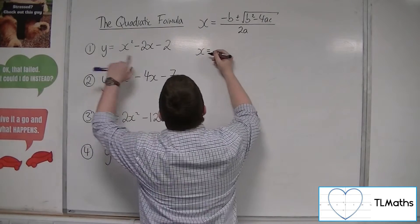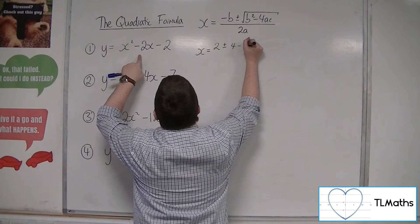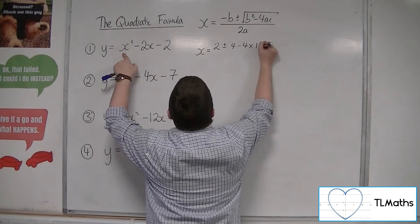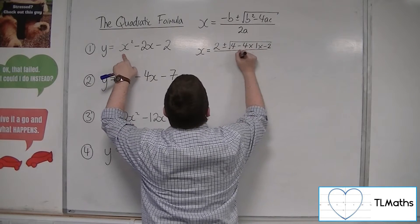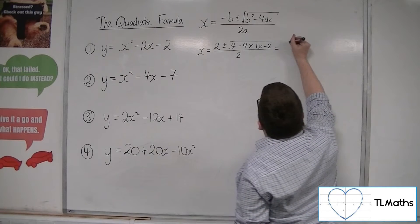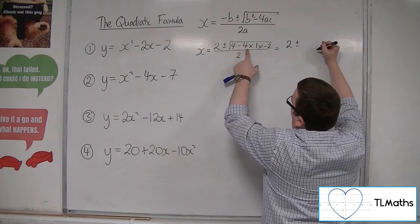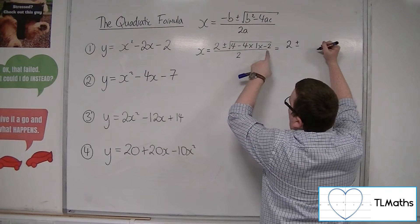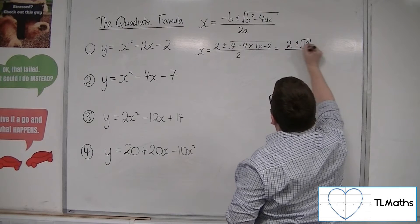x is equal to minus b, so 2, plus or minus b squared, so 4, take away 4 times 1 times minus 2, square rooted, all over 2a, so 2. So we have 2 plus or minus 4, minus 4 times 1 times minus 2 is 8, so 4 plus 8 is 12, square rooted, all over 2.